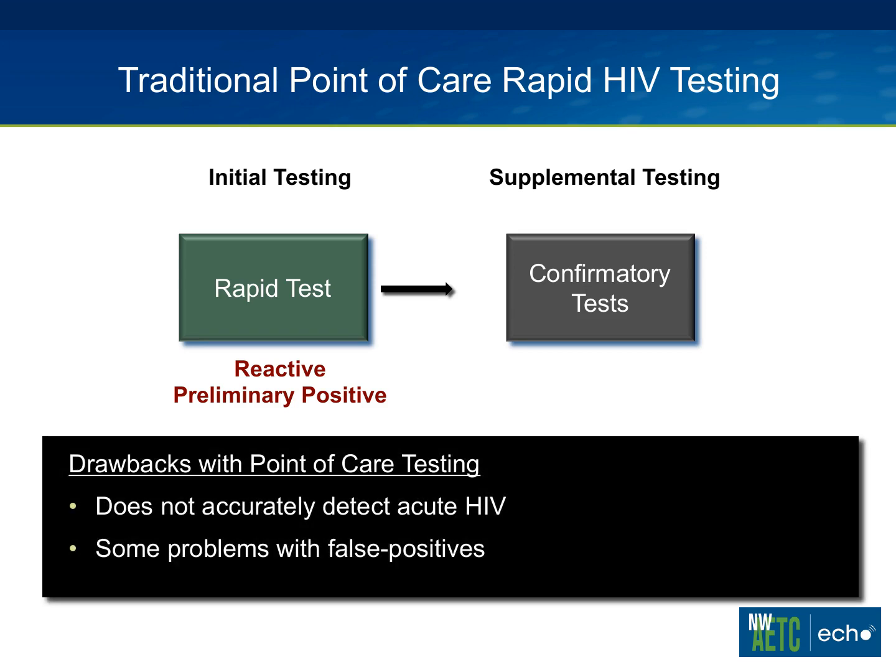The drawbacks of those are, again, these are not accurate tests for detecting acute HIV, and as we know, there have been some problems with false positives with the OraQuick tests. We now have a new point-of-care test that is a fourth-generation antigen-antibody test that I think may really be a game-changer in terms of what you can do from point-of-care rapid HIV testing.